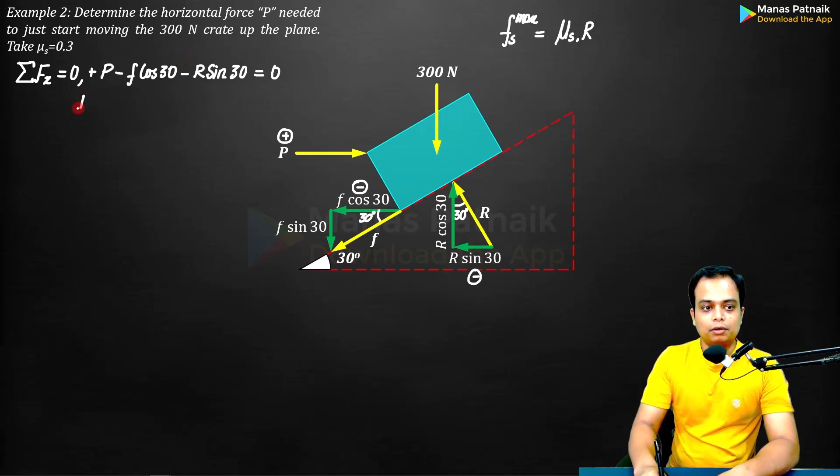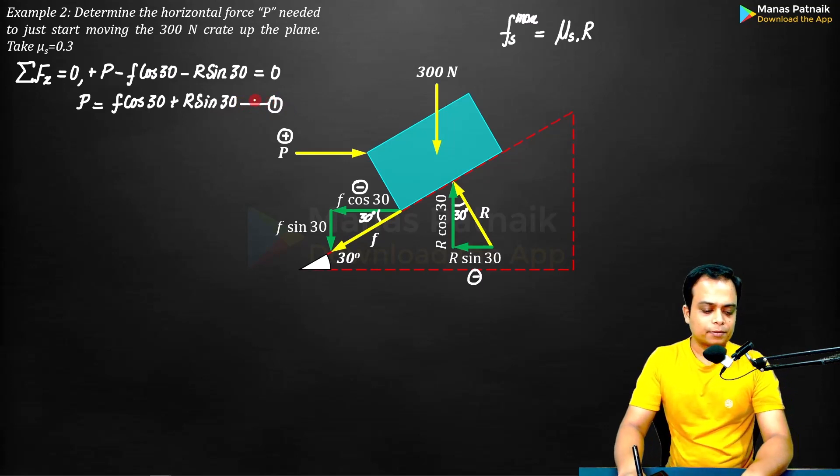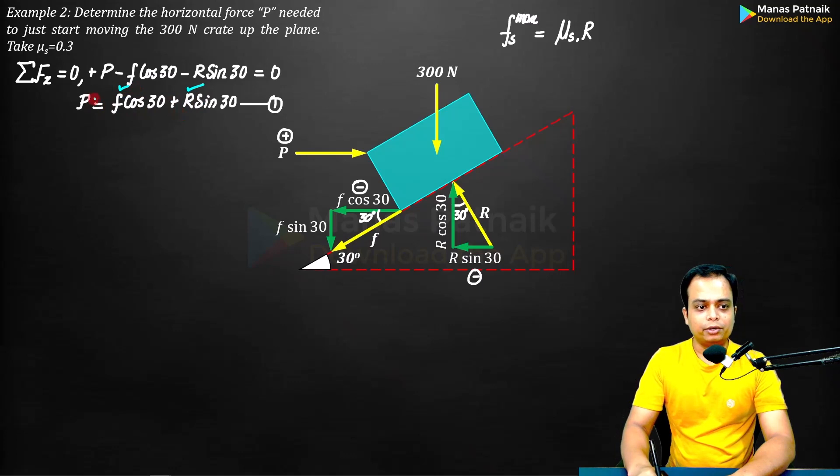We can see as many as three variables: P, f, and R. What do we need? We need to find P. So take P to the LHS of the equation and write down the remaining stuff. This is going to be equal to f cos 30 plus R sin 30. Let's say this is our equation number one.